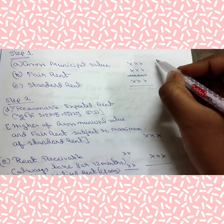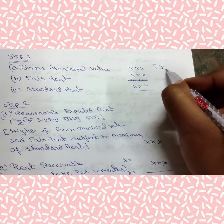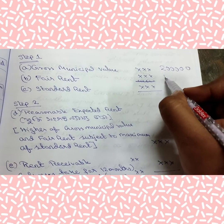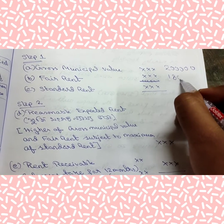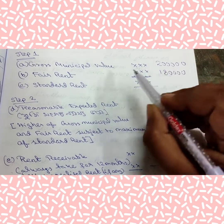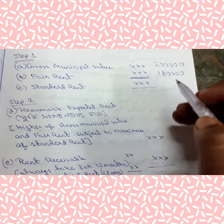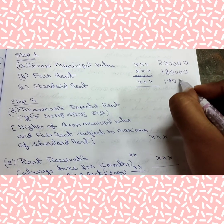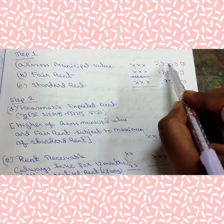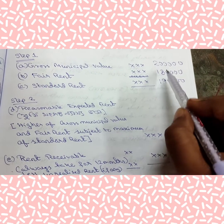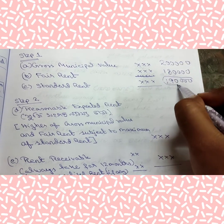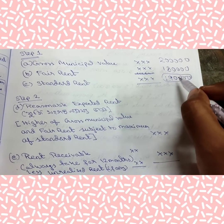Suppose gross municipal value is 2 lakhs and fair rent is 1 lakh 80,000. Gross municipal value is higher. But suppose standard rent is 1 lakh 90,000. The higher value — gross municipal value — exceeds the standard rent. In that case, you have to take the standard rent, 1 lakh 90,000, as the reasonable expected rent.